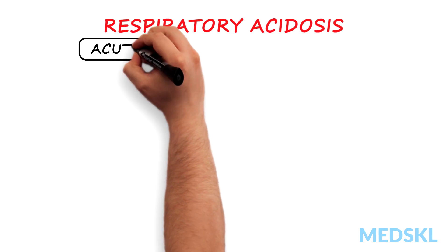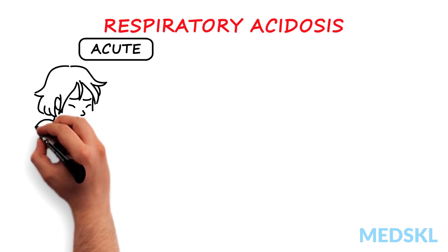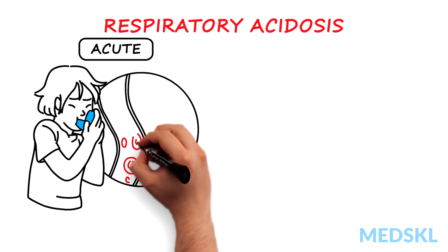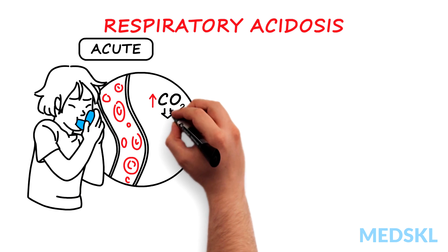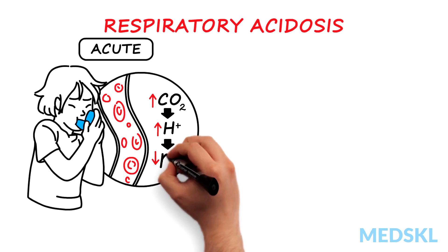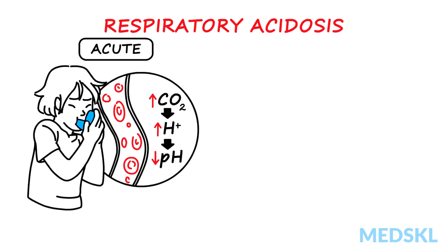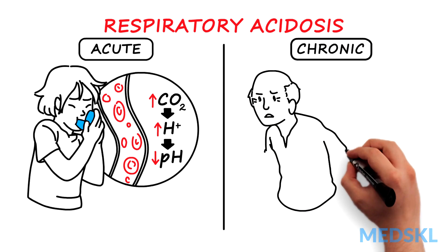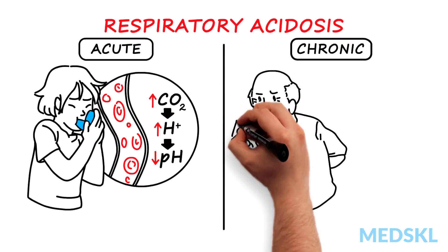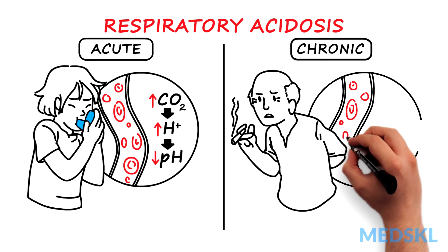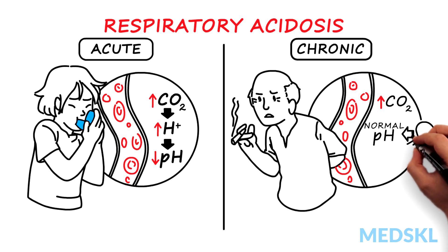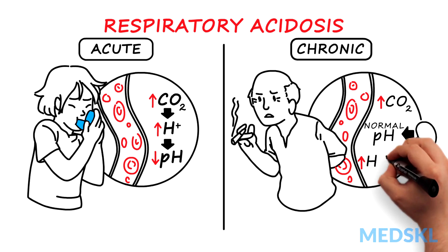In acute respiratory acidosis, an abrupt failure of ventilation causes the PCO2 to be elevated with an accompanying acidemia. In chronic respiratory acidosis, the PCO2 is elevated with a near-normal pH, secondary to renal compensation and elevated serum bicarbonate levels.